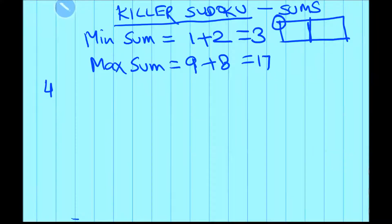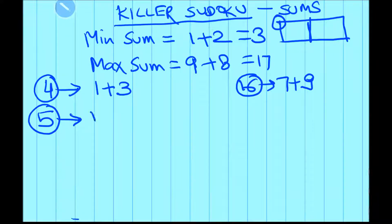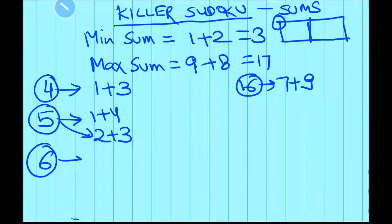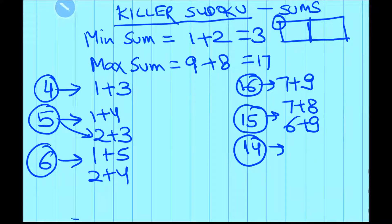A sum of 4 is possible with only 1 plus 3, and 16 is possible with 7 plus 9. For sum 5, there are 2 possible combinations: 1 plus 4 and 2 plus 3. For sum 6 also, there are 2 possible combinations: 1 plus 5 and 2 plus 4. For 15, there are 2 possible combinations: 7 plus 8 and 6 plus 9. For 14 also, there are only 2 combinations: 6 plus 8 and 5 plus 9.